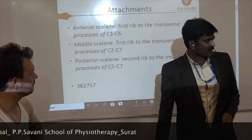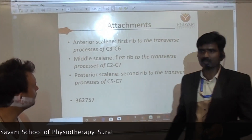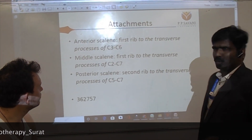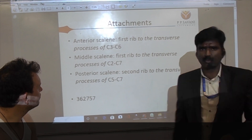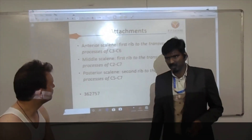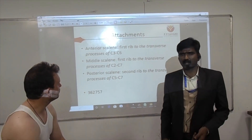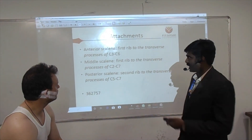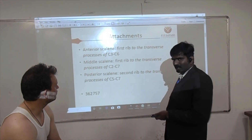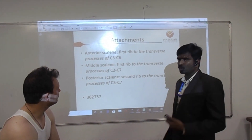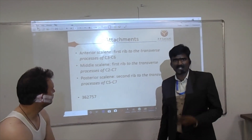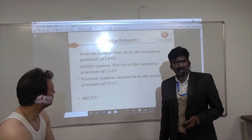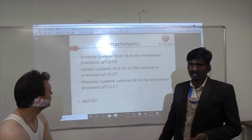What is the attachment of the scalene muscle? The scalene muscle is an accessory muscle of respiration. The primary muscles are the diaphragm and intercostal muscles, and the accessory muscles are the scalene muscles. There are three groups: Anterior scalene, Middle scalene, and Posterior scalene.